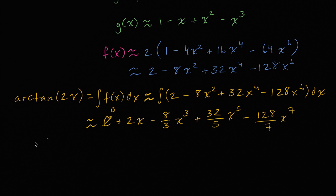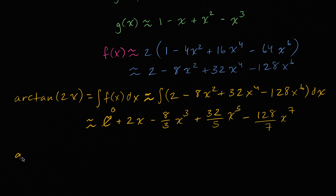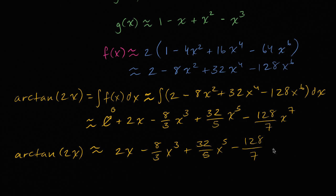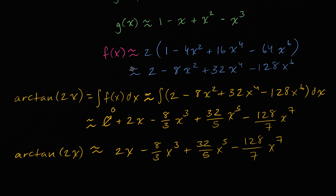So just like that, we're done. We've figured out that arc tangent of 2x is approximately equal to 2x minus eight-thirds x cubed plus 32 over 5 x to the fifth minus 128 over 7 x to the seventh. If we wanted more terms, we could have included more terms in the earlier steps. Hopefully you enjoyed that fairly hairy problem — but as you saw, it's not as hairy as we thought it was going to be.